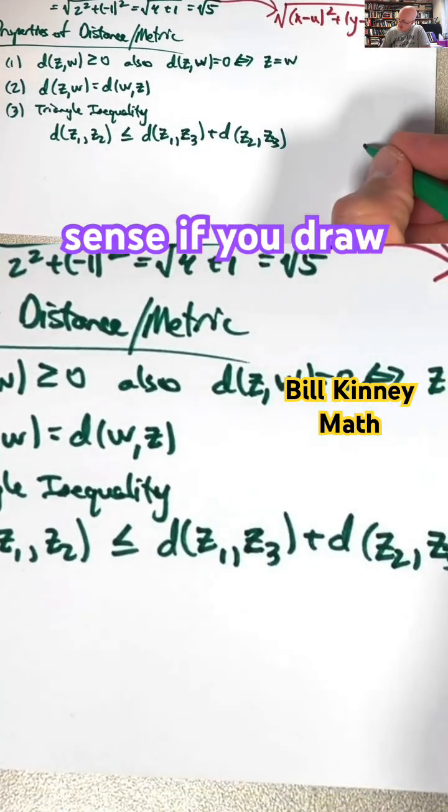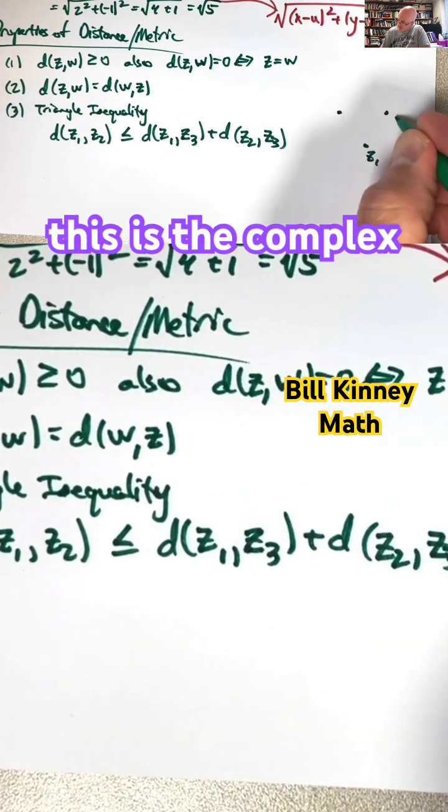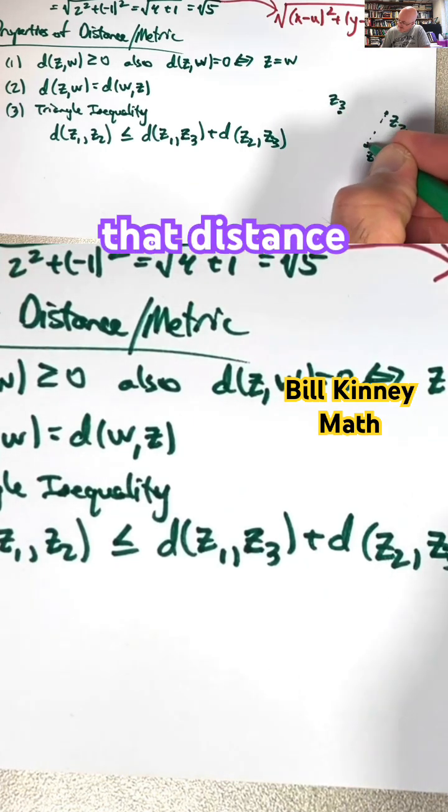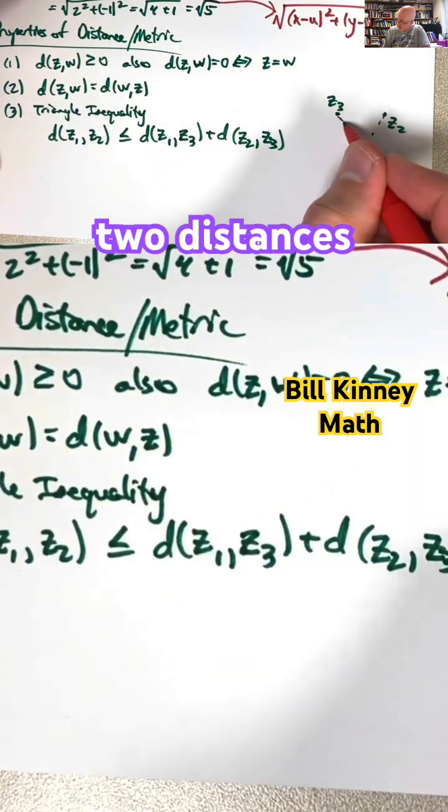Again, it makes intuitive sense if you draw these anywhere you want, pretending this is the complex plane. The distance between Z1 and Z2, that distance right there, is less than the sum of these two distances right here.